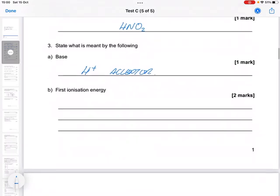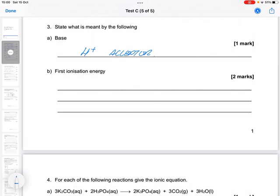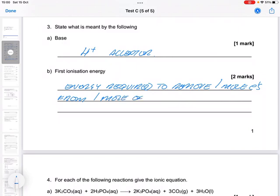And then the first ionisation energy, remembering everything's got to be linked to the mole. So it's the energy required to remove 1 mole of electrons from 1 mole of atoms. And remember, there needs to be in the gaseous state.